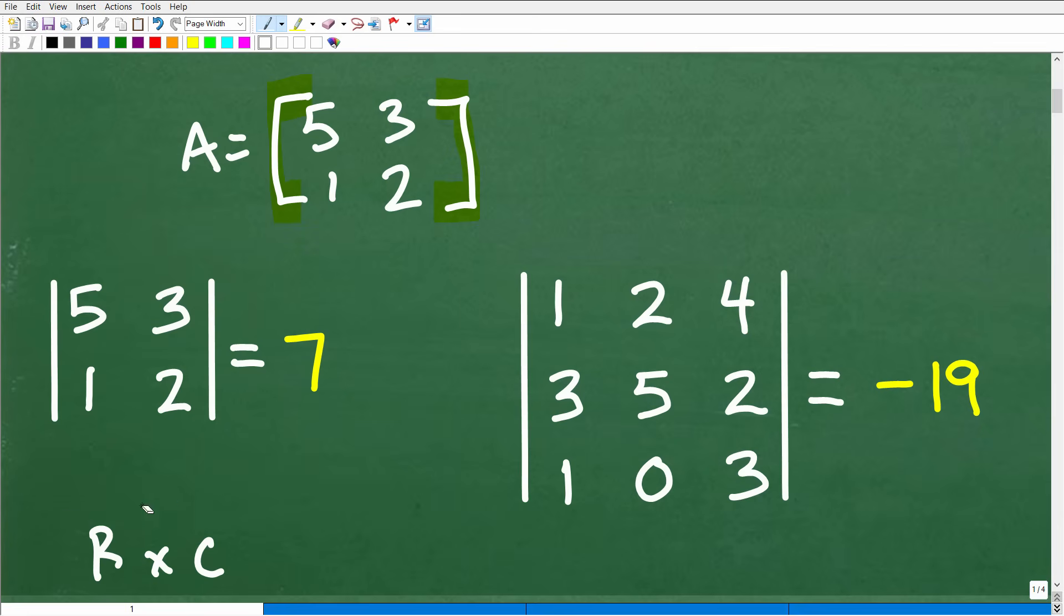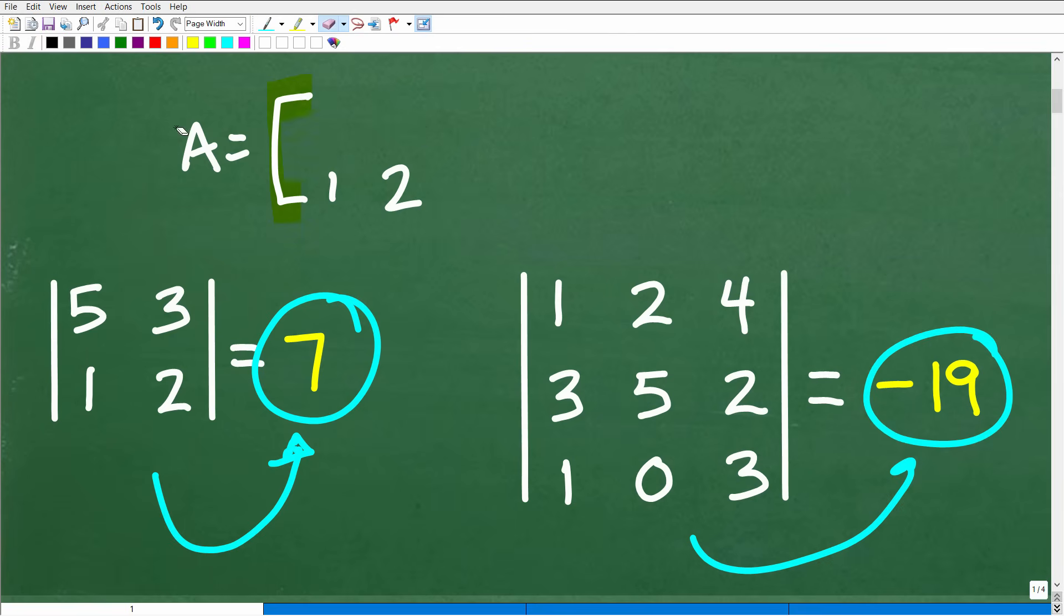A determinant is just an associated number with a square matrix. In this case, the answer for this two by two is seven, and the determinant for this three by three is negative 19. So that's a mini lesson on the concept of what a matrix is and what a determinant is. You can't take a determinant of a non-square matrix.